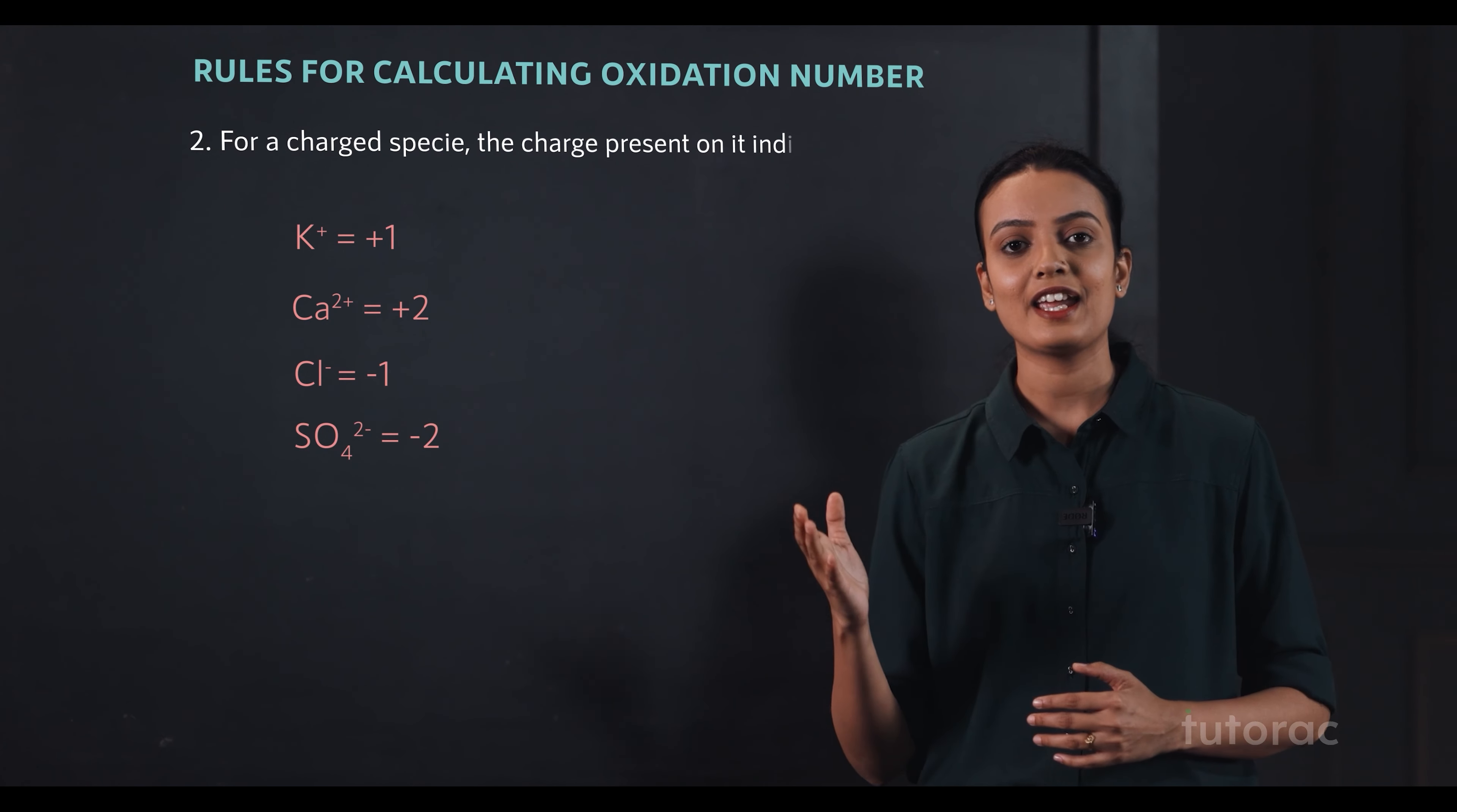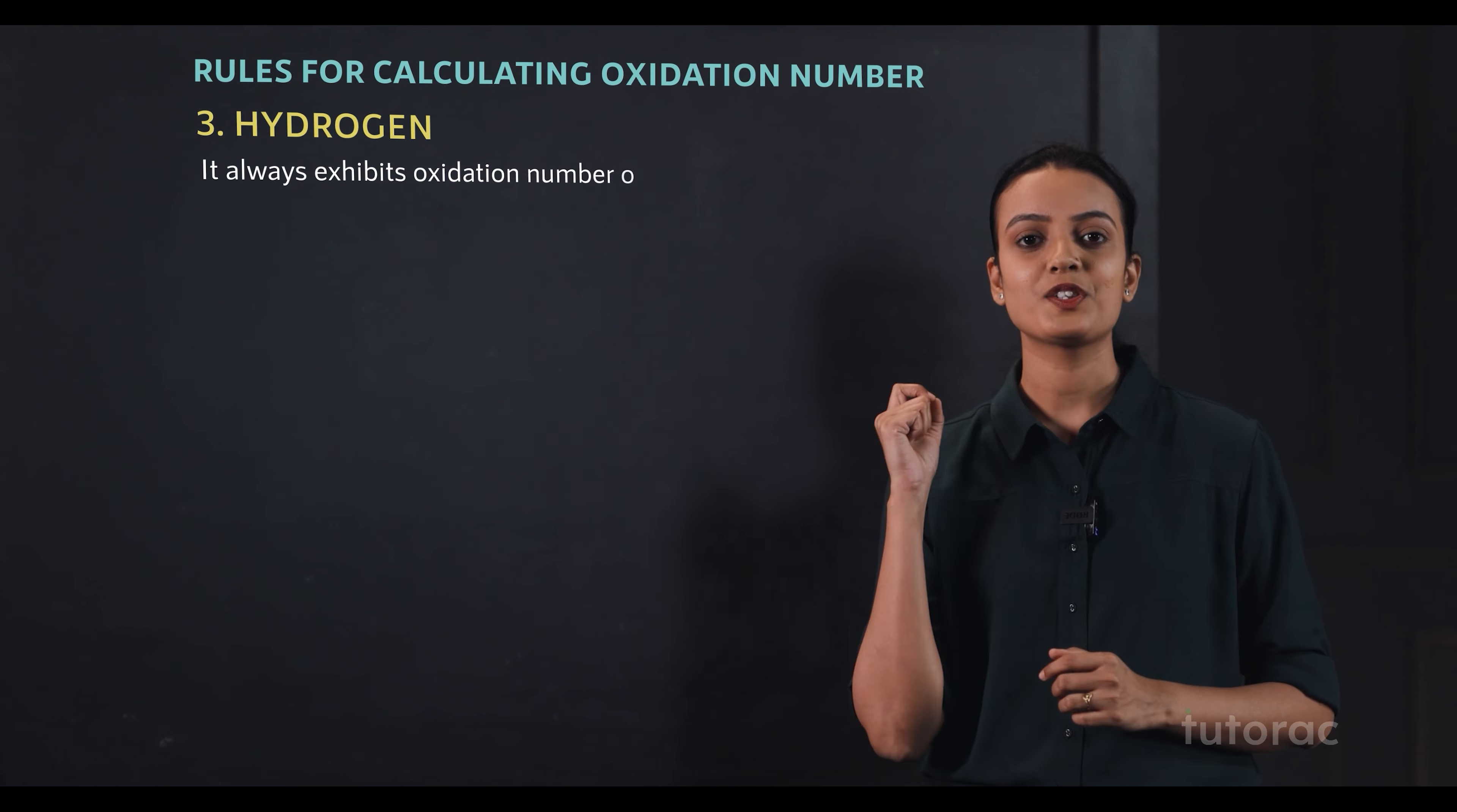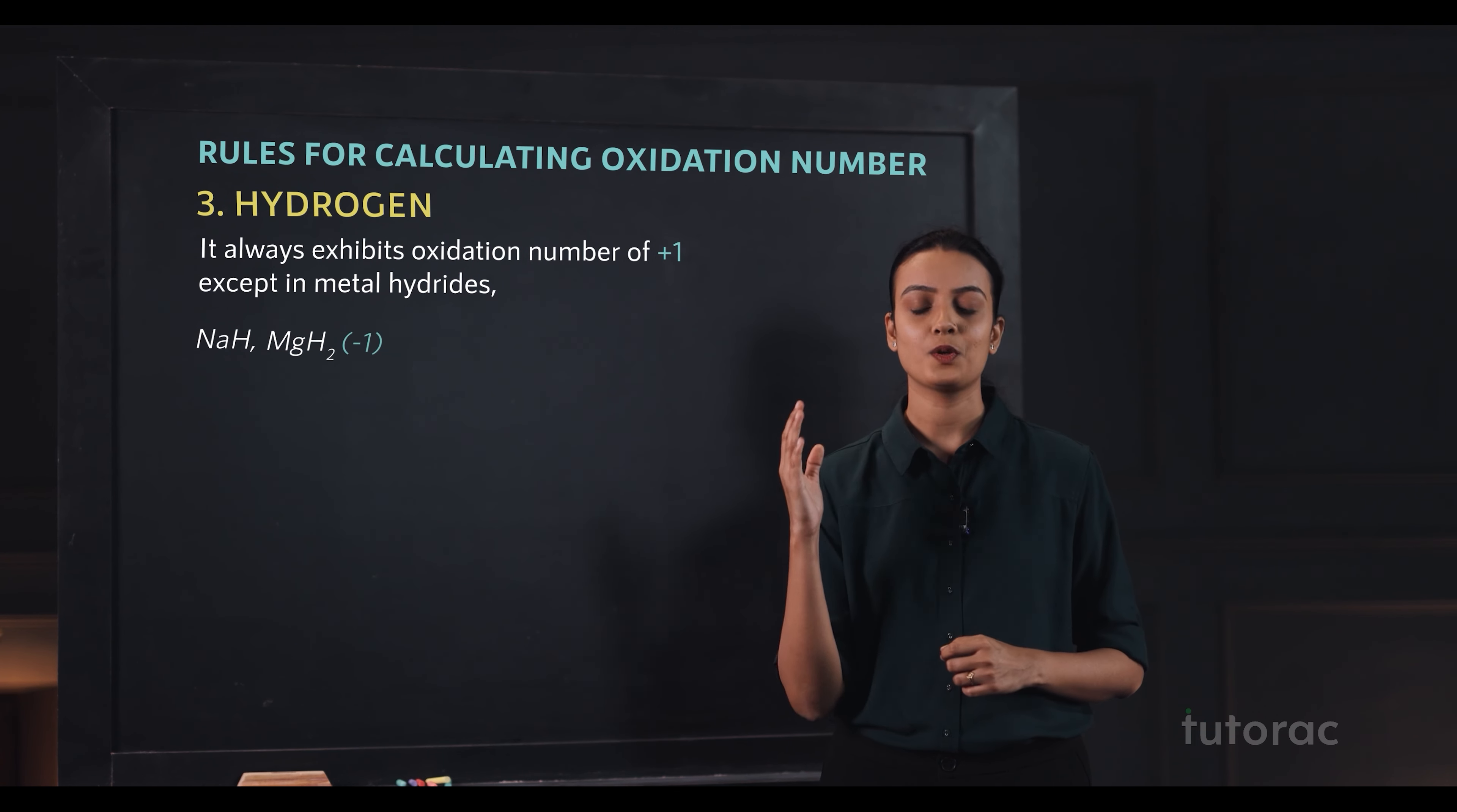Coming to hydrogen, it always exhibits oxidation number of plus 1 except in metal hydrides. For example, in sodium hydride, magnesium hydride, it exhibits an oxidation number of minus 1.